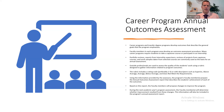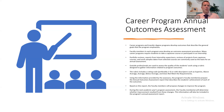Based on this report, faculty members will propose changes to improve the program. During the next academic year's program assessment, faculty will determine whether improvement resulted from those changes — this is our action plan — and this information will be included in the program's annual assessment report. We get outside evaluators to fill out the rubric and evaluate how we're doing, then bring that data to the responsible faculty and review it together. Faculty, deans, and the provost work together to create an action plan, and then go back to evaluate whether the improvements were successful.